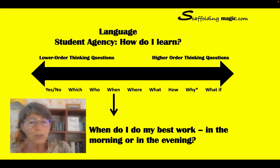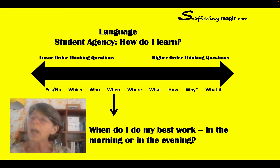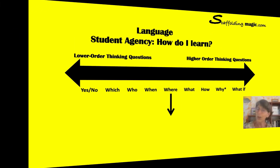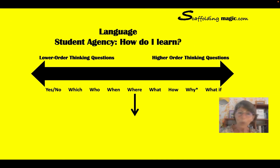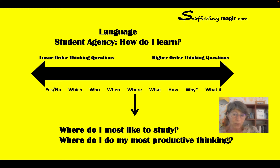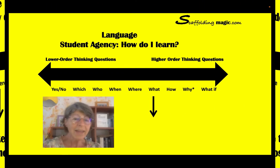Do they process information better in the morning, or do they remember things more easily towards evening? It's important for them to know this so they can learn to plan accordingly. Another really important self-knowledge question is the 'where' one — by asking them this, we give them the opportunity to become more aware of the choices they make when they want to do quality work.